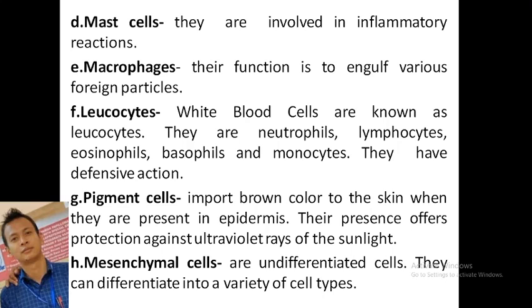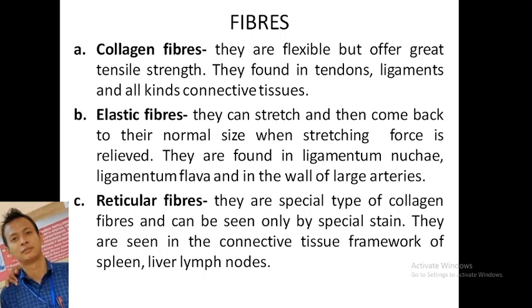Macrophages engulf various foreign particles — they have phagocytic functions operating on foreign particles in the matrix. Leukocytes are white blood cells — they include neutrophils, basophils, eosinophils, and monocytes, and have a defensive action. Pigment cells contain melanin giving the brown color of skin; when present in the epidermis, they provide protection against ultraviolet rays of sunlight. Mesenchymal cells are undifferentiated cells that can develop into a variety of cell types.